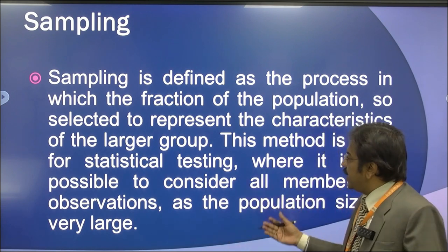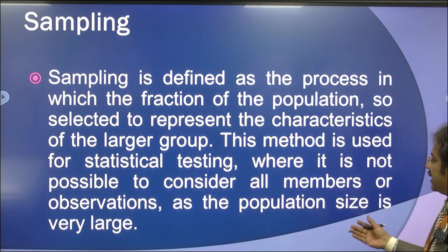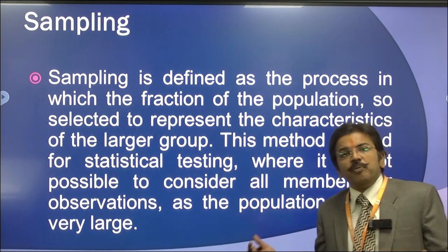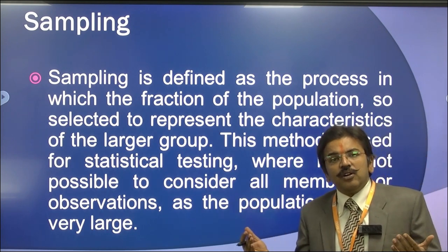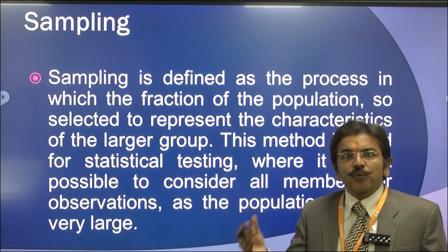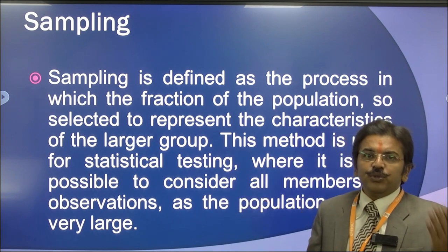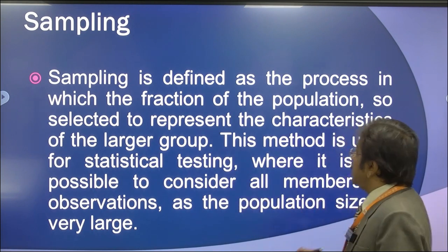In sampling, we consider that the population is very big, so from the population we select certain sample units and use that sample for our study. The researcher selects certain units from the population, and this unit is going to work as a whole representative of the population.